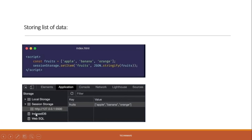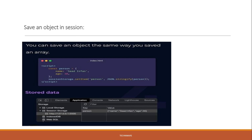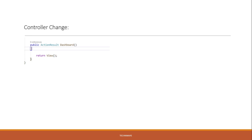Users can also store a list of data. For example, if we have multiple items like fruits with comma-separated values, we can use JSON.stringify() to convert the list into a single stringified value and save it against a key. Similarly, we can save a JSON object — if we have a list of JSON values, we can save them directly as a single JSON object.